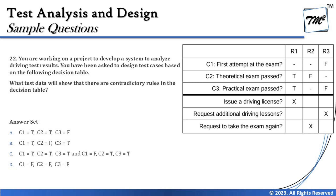Let's start with option A: T, T, F — meaning C1=True, C2=True, C3=False. Looking at the table, this combination does not match any rule. Rule R1 has C2 and C3 both true, but in option A, C3 is false. C3 is false only at R3, but C1 is hard-coded as false there. So the combination T, T, F does not fit into any of R1, R2, or R3 — option A is eliminated.